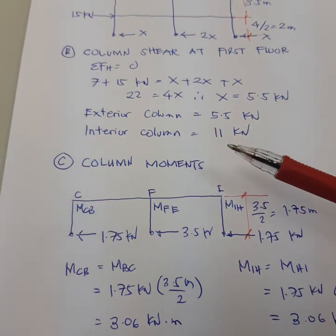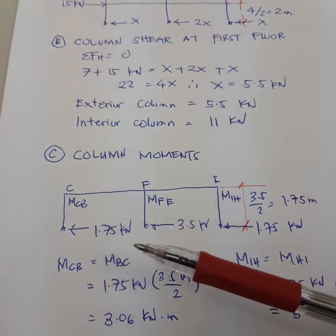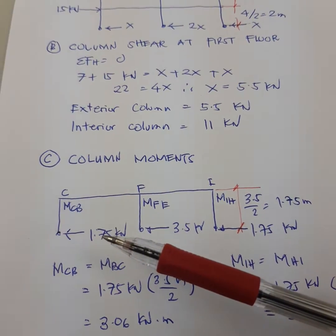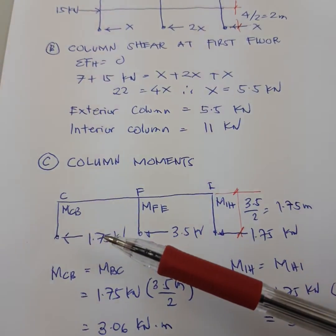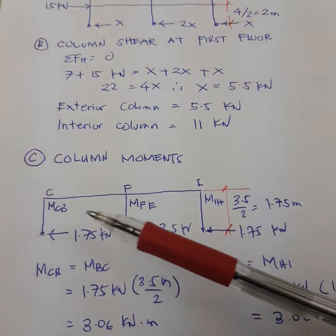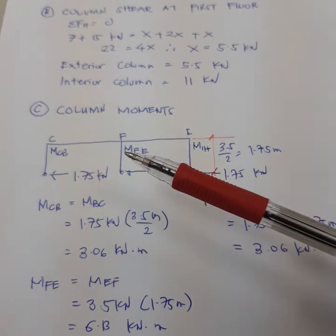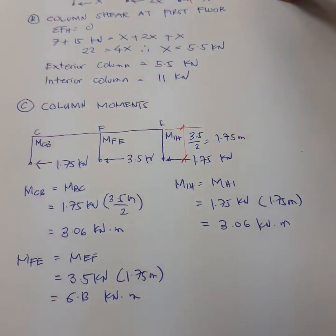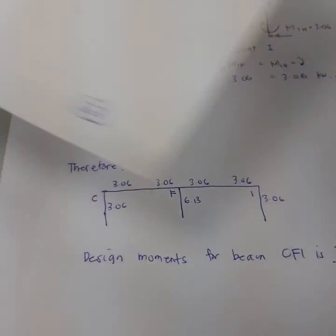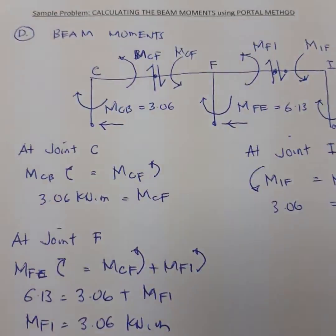From here we can compute now the column moments. Column moment is just simple, this is 1.75 in the second floor that we have computed, multiplied by this height which is 1.75. All the same for moment FE and moment IH. This is very important for us to compute the beam moments.